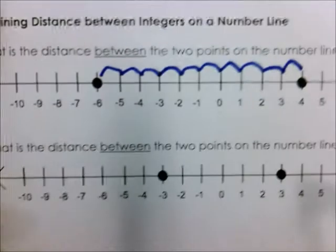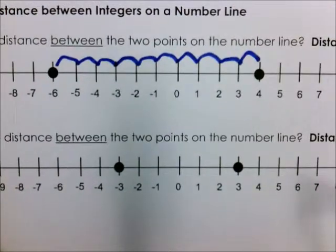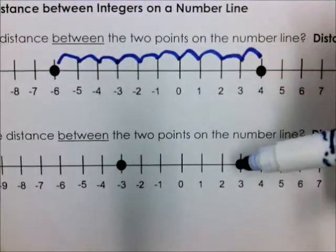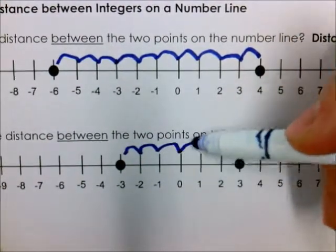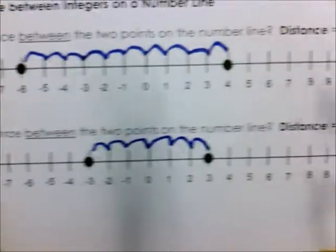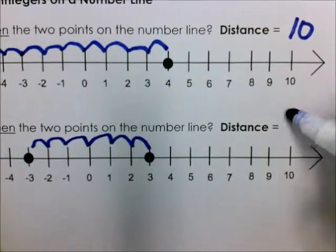And then the same thing on the bottom, same type of question. What's the distance between two points, negative 3 and positive 3? So it's going to be 1, 2, 3, 4, 5, 6. So my distance is 6 there.